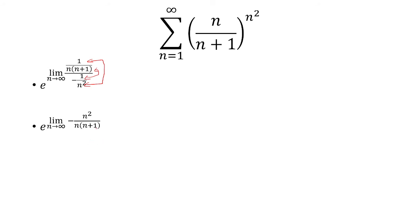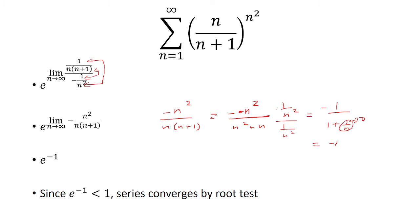And now if you take n approaching infinity, this should go to negative 1 because negative n squared over n times n plus 1 is the same thing as negative n squared over n squared plus n. Multiply everything by 1 over n squared. We get negative 1 over 1 plus 1 over n. And so this goes to 0, which means we have negative 1. That's going to be the exponent now. And because this is less than 1, the series converges by the root test.